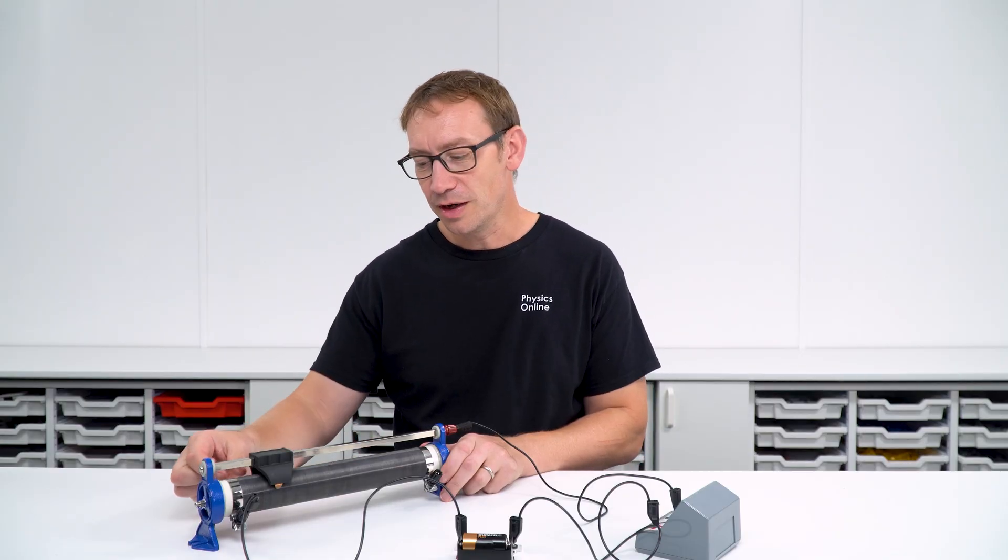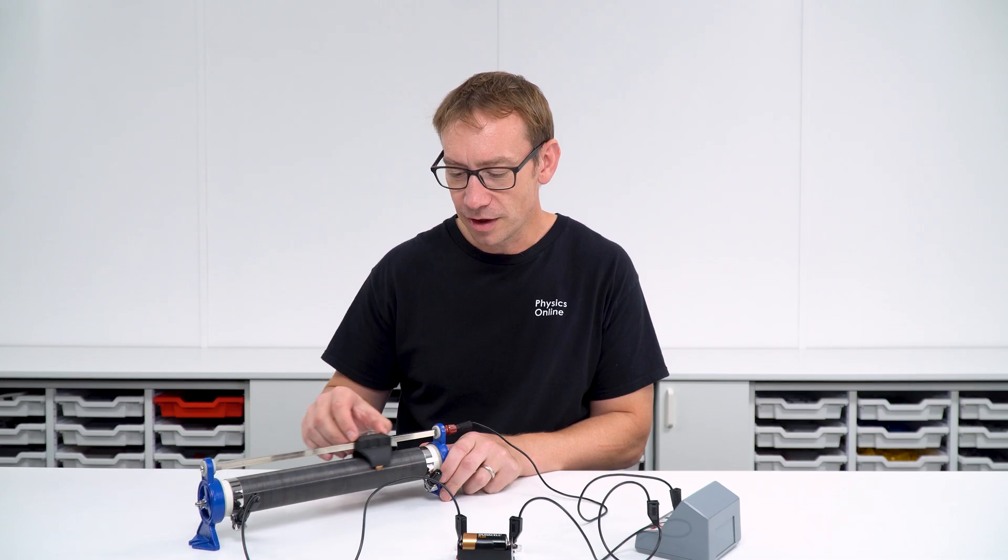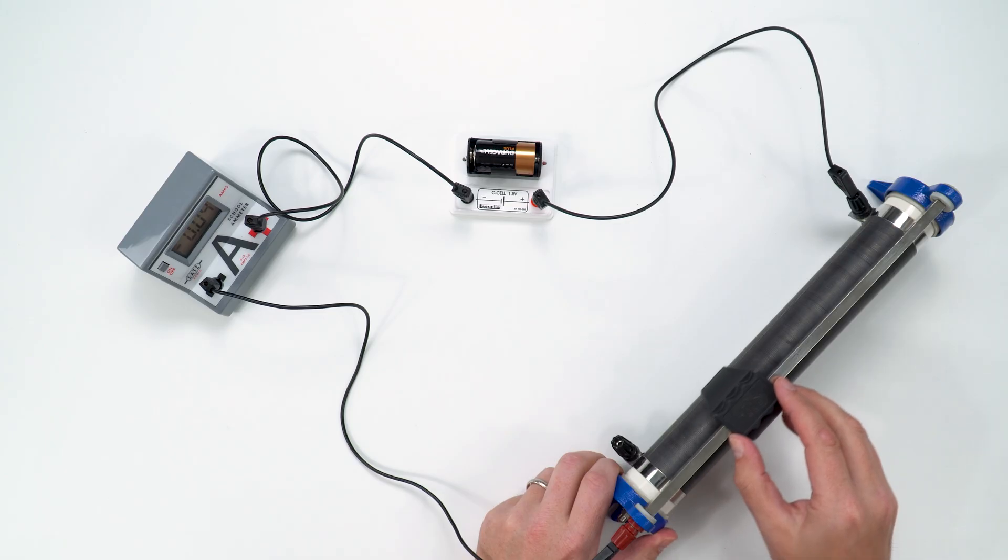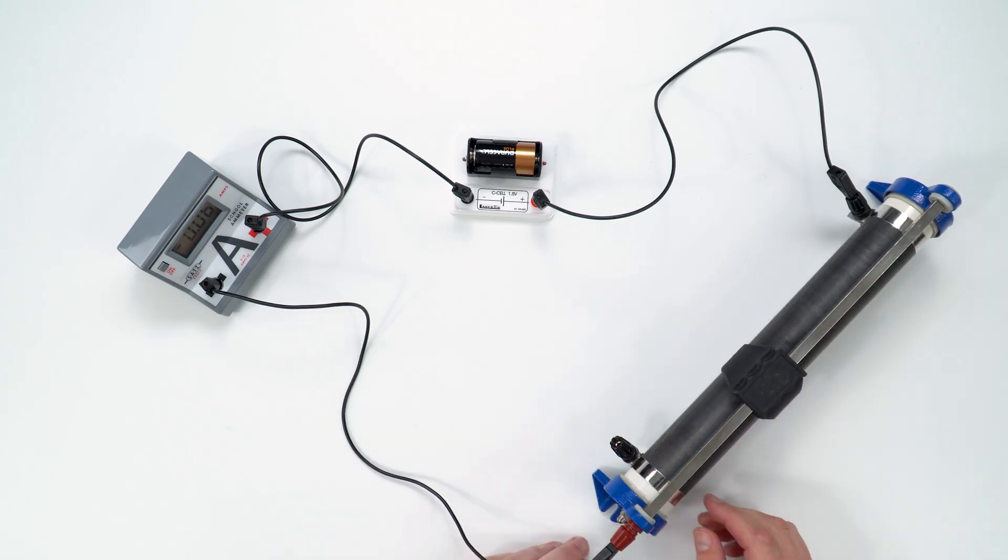This means we can have a low resistance where we've got a short length of wire, or we can have a larger resistance where we've got a larger length of wire that the electricity is going to be moving through. And what we can do is change this to actually change the current that's going to be flowing in that circuit.